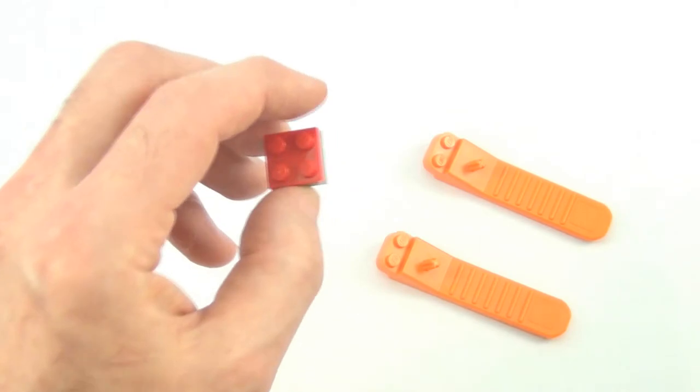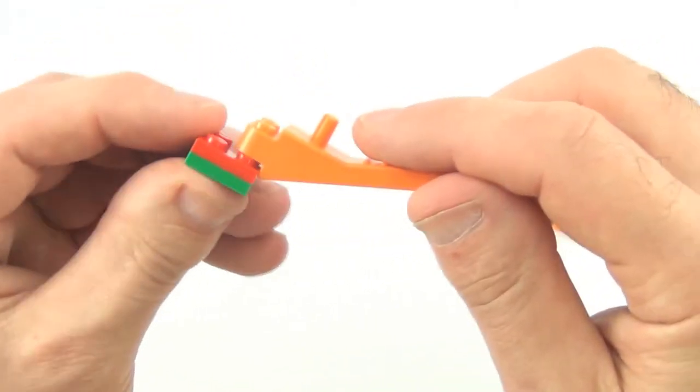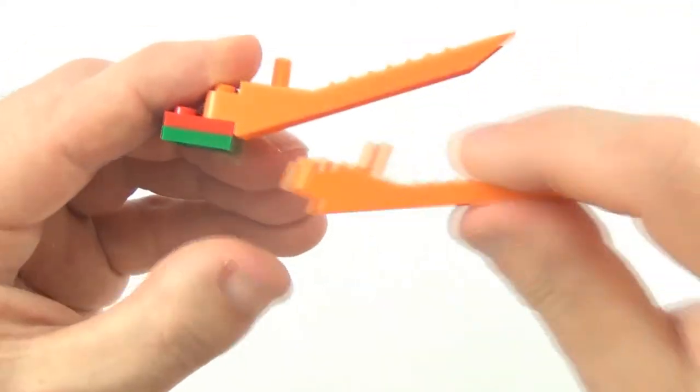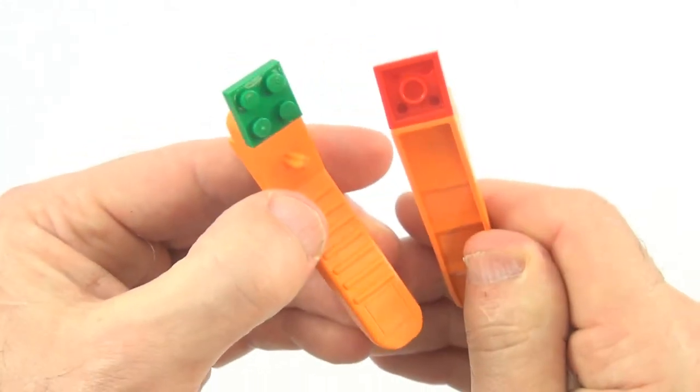Separating two 2x2 plates, very similar to the 1x2 plates. Put a brick separator on top, another brick separator underneath, squeeze them both together, and they should come apart very easily.